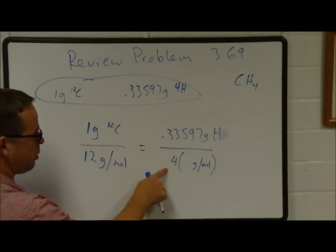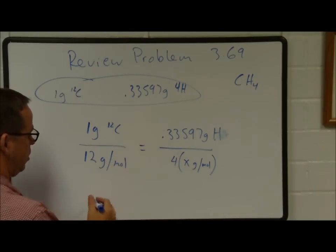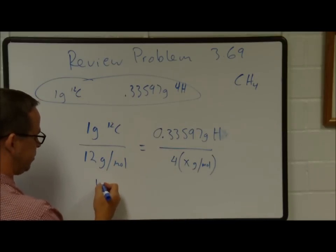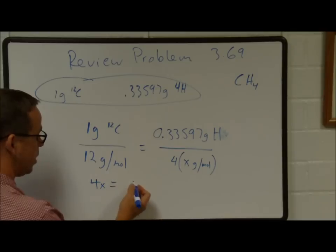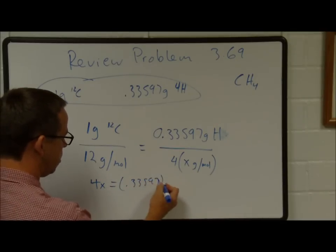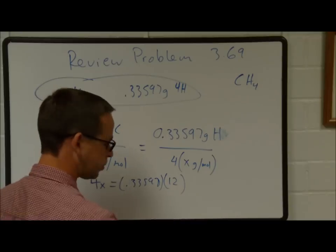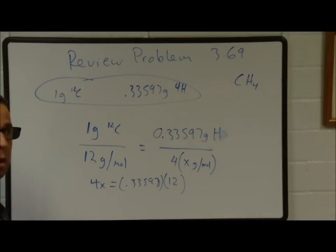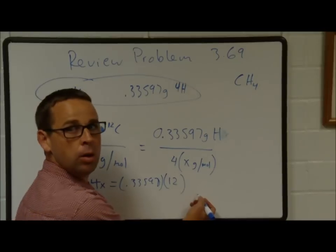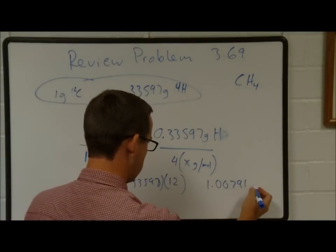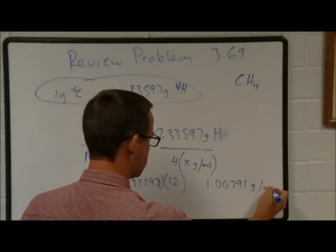The molar mass is how much one mole of hydrogen weighs, and four is how many mole equivalents of hydrogen are in the given sample. So, one times 4x equals 0.33597 times 12. That's 4x equals 0.33597 times 12. We take 0.33597 times 12 divided by 4, and we get 1.00791. The units are grams per mole.